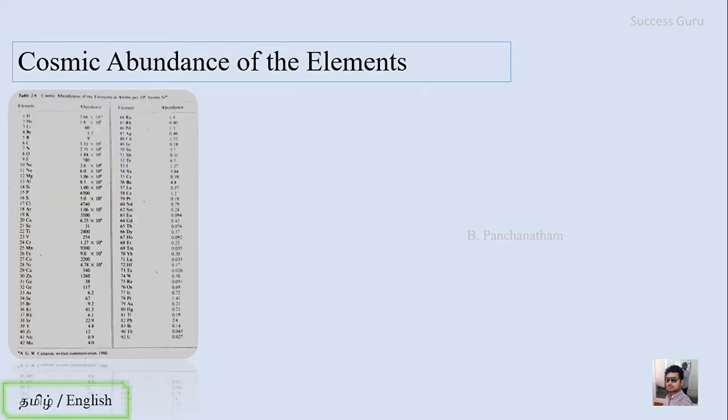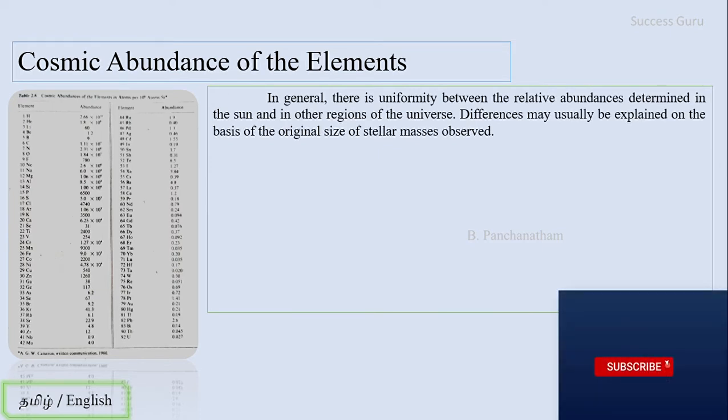Let us see the table that was proposed by Cameron. You can see the table here from hydrogen to uranium, and the abundance is given in terms of percentage.